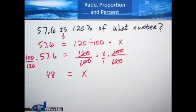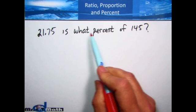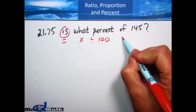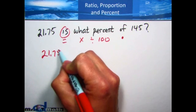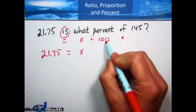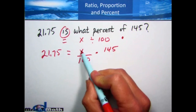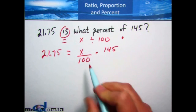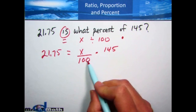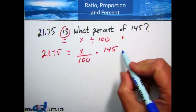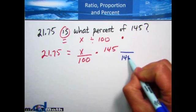Let's take a look at one more example. This says: 21.75 is what percent of 145? Remember: equal sign, x value, 'what percent' means divide by 100, and a multiply sign. Let's create an equation: 21.75 equals x over 100 times 145. X is being divided by 100 and multiplied by 145, so I do the exact opposite to solve — multiply by 100 and divide by 145.